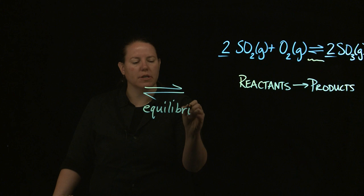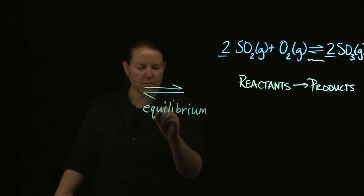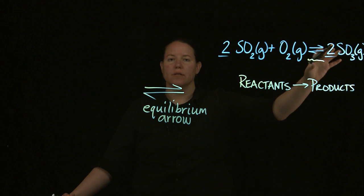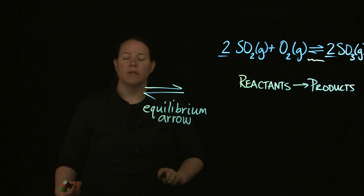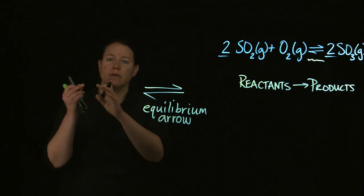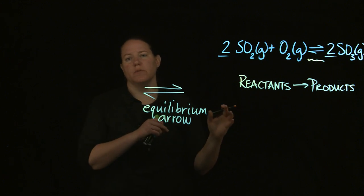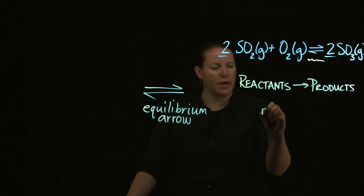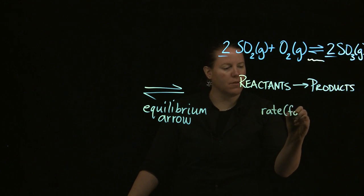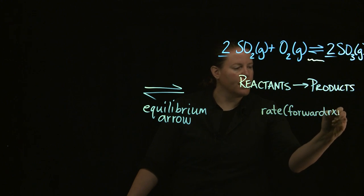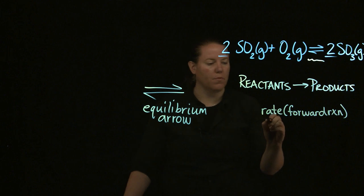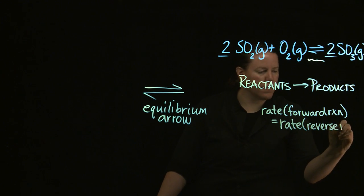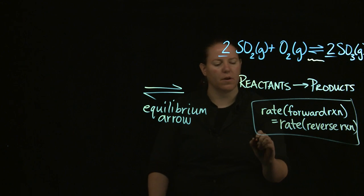What does equilibrium actually mean? Equilibrium means that you will have the reaction go from reactants to products and then back from products to reactants, until the specific point where the rate of the forward reaction going from reactants to products is exactly equal to the rate of the reverse reaction from products to reactants.